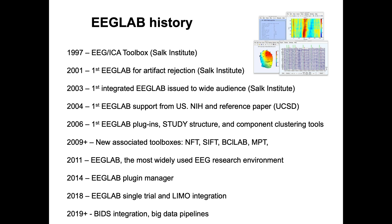In 2011, that's when a paper was published showing EEGLAB was the most popular EEG software for processing EEG. In 2014, we had the EEGLAB plugin manager that allowed you to install plugins from within EEGLAB. In 2018, we had the integration with LIMO to perform linear modeling of EEG data. And 2019, that's what we're working on right now — integration with BIDS and big data pipelines.